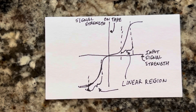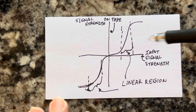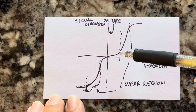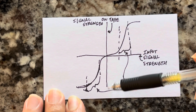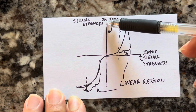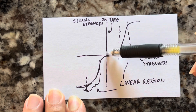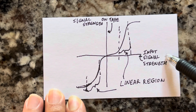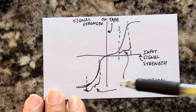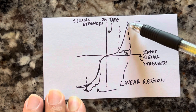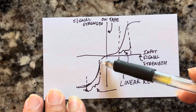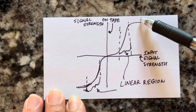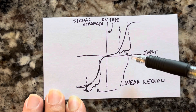That recording sounded so horrible and so distorted because of the lack of AC bias. Here's the rationale for AC bias: if you took a graph of the tape response — what you get on tape on the y-axis and the strength of the input signal on the x-axis — you don't get a linear response.